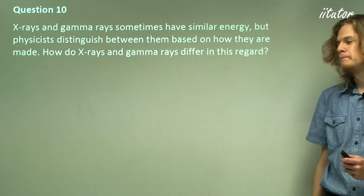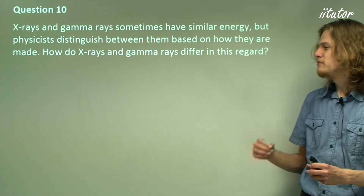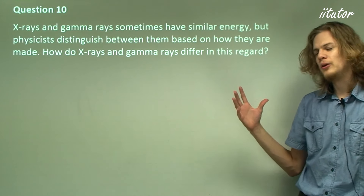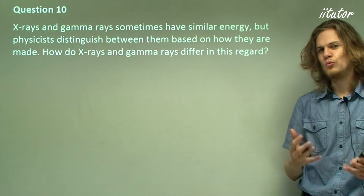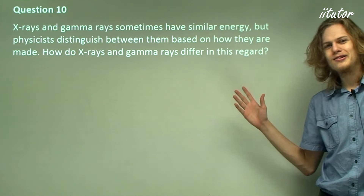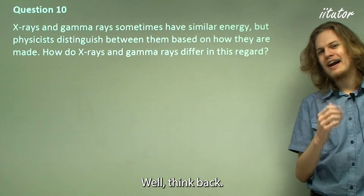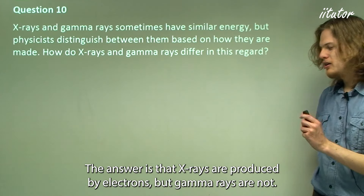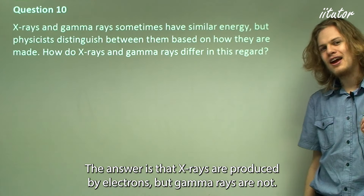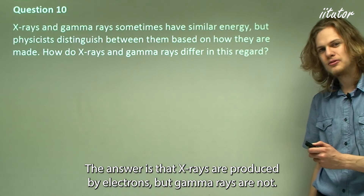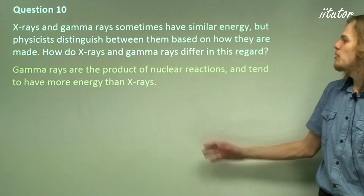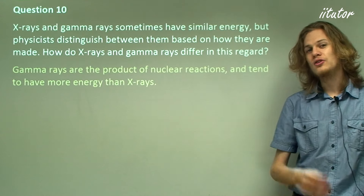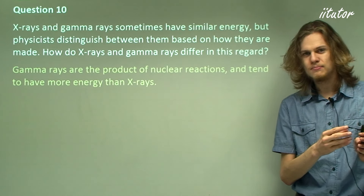Question 10: X-rays and gamma rays sometimes have similar levels of energy, but physicists distinguish between them because they are created in different ways. So how are they created? The answer is that x-rays are produced by electrons, but gamma rays are not. Gamma rays are the product of nuclear reactions that occur in the nucleus of radioactive atoms.